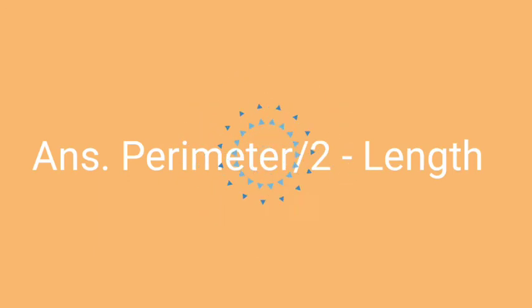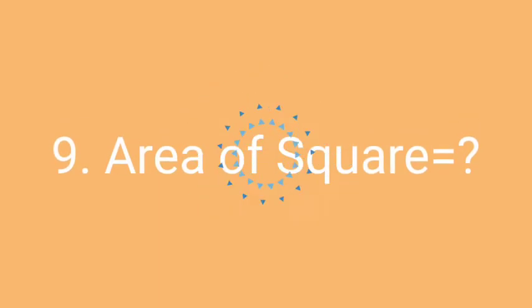The correct answer of this question will be perimeter by 2 minus length. Breadth of rectangle equals perimeter divided by 2, minus length.